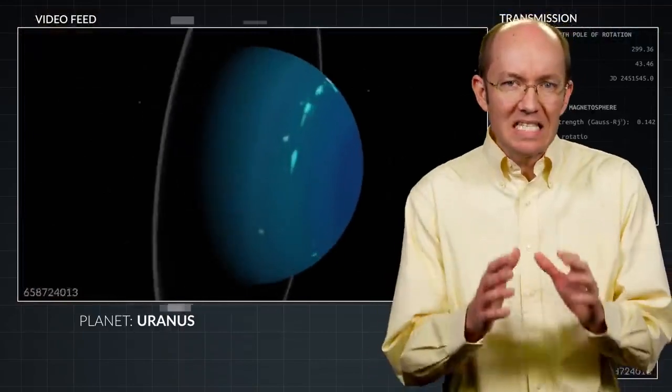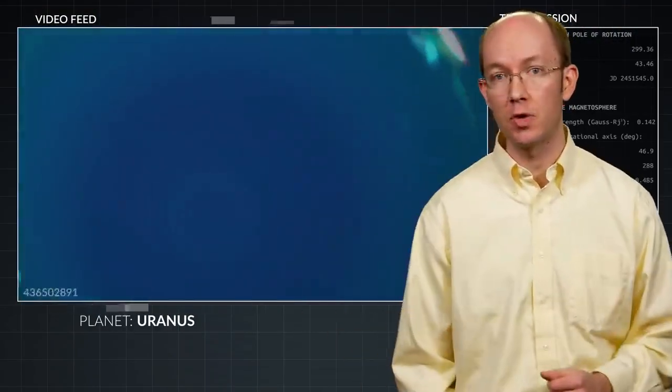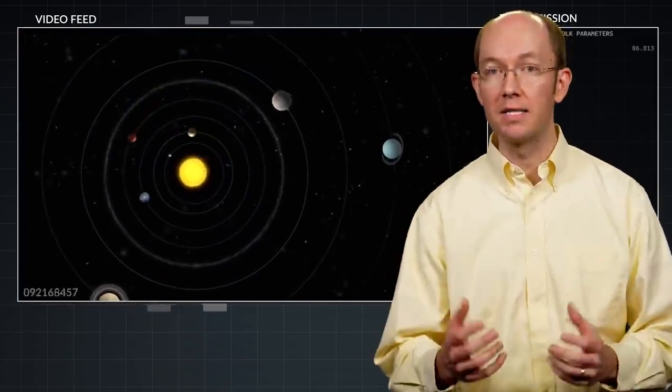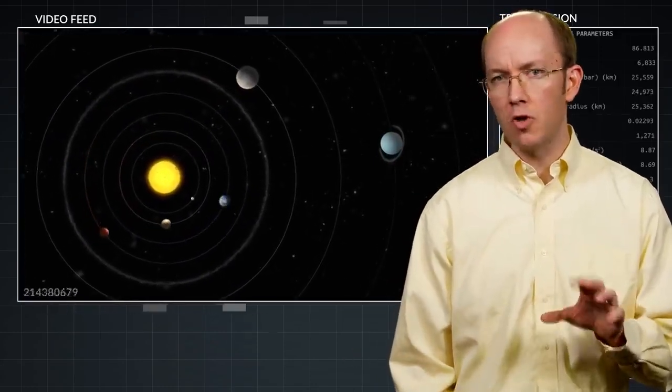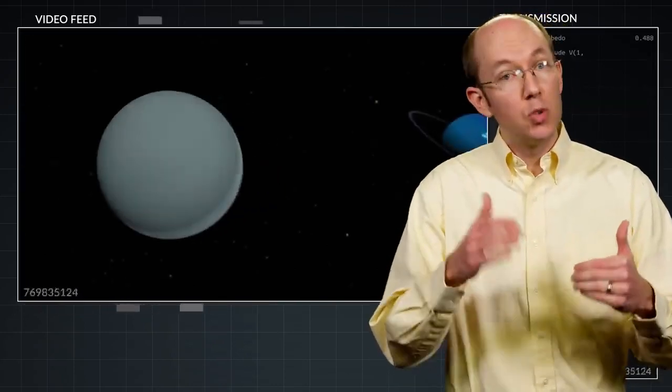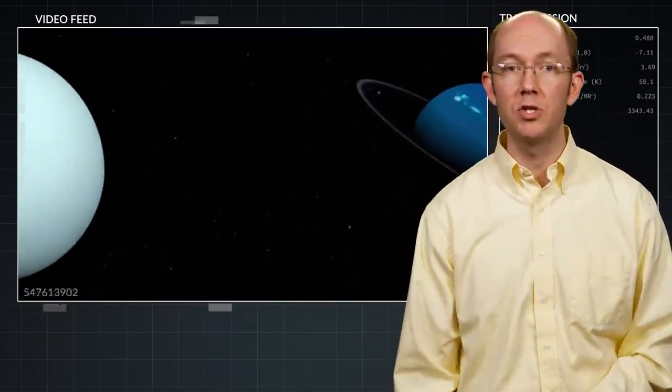Uranus became intensely studied over the next half century. Its orbital parameters were slowly calculated and refined. However, by the early 1800s, astronomers had already noticed that there were significant differences between the calculated and the observed locations of Uranus.